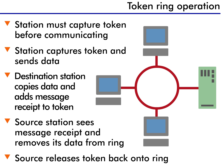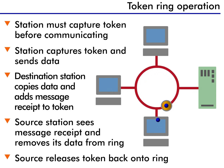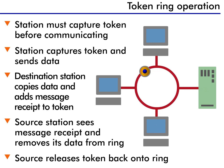As we discussed in our lessons on Ethernet, Ethernet uses CSMA/CD as its access method. This means anyone can attempt to access the network at any time, which can result in data collisions. The idea behind Token Ring was to prevent these data collisions.